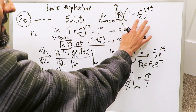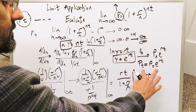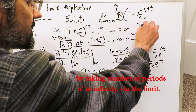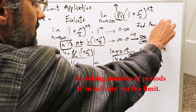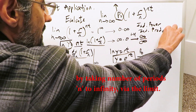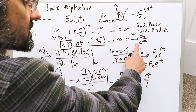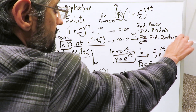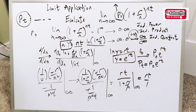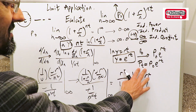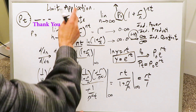You've essentially converted the periodic compound interest formula into the continuous compound interest formula using L'Hôpital's rule. The procedure went: indeterminate power type → indeterminate product type → indeterminate quotient type, then L'Hôpital's derivative procedure took it all the way to completion. This is the entire procedure to convert periodic compound interest into continuous compound interest by means of this limit application.